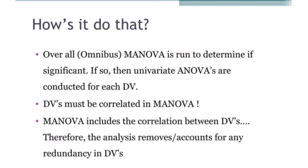Overall MANOVA is run to determine if significant. If so, then univariate ANOVAs are conducted for each dependent variable. One important thing in MANOVA is that it finds the correlation between dependent variables, which is different from ANOVA. This inclusion of correlation between dependent variables is what removes Type 1 error.